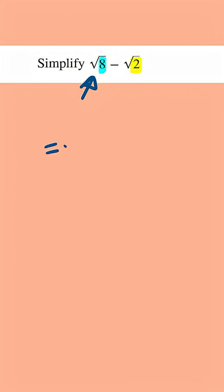And so simplifying root 8, this is the same as the square root of 4 times 2, and then we've got the minus root 2. Splitting the first square root, this is going to be the square root of 4 times the square root of 2...